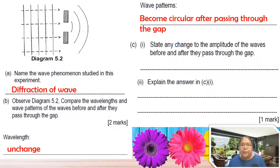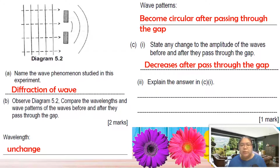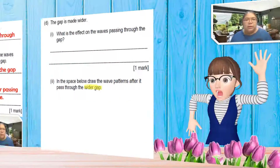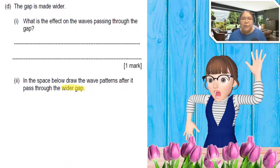Wave pattern before passing through is straight; after passing it becomes circular. Now state any changes to the amplitude of the wave before and after passing through. After passing, the amplitude becomes less - it decreases. Explain why: the wave spreads out to a wider area, energy decreases, so amplitude decreases. Answer: wave energy is spread out after passing through the gap, so energy decreases.